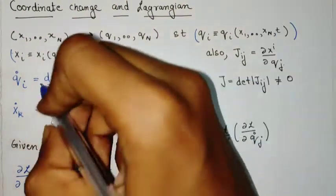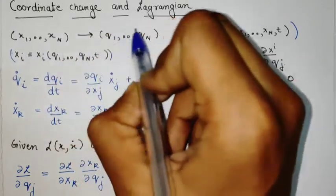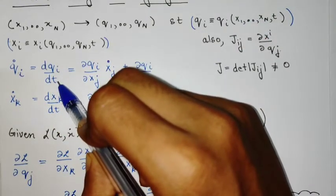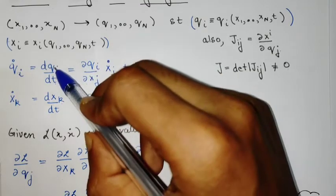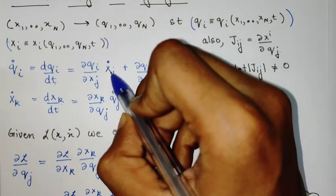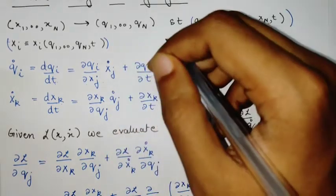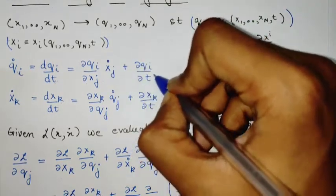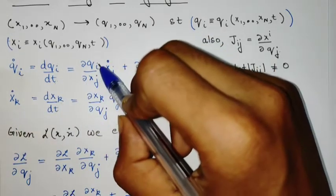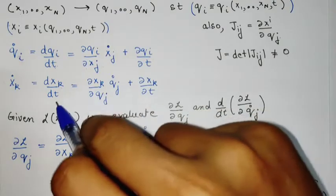With these two relations we can calculate q_dot and x_dot. Using the chain rule, since qi is a function of n variables, we get dqi/dt = (∂qi/∂xj) x_j_dot, with summation over j from 1 to n, plus a partial time derivative term. All repeated indices in this video are summed over. A similar calculation holds for x_k_dot, and one can verify the free index is k throughout.